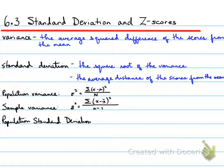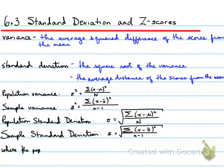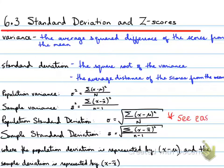Population standard deviation is the square root of the variance, and the sample standard deviation is also the square root of the variance of a sample. Population deviation is represented by x minus the mean, and sample deviation is represented by x minus the mean as well. There is also an easier alternative formula we will look at shortly.